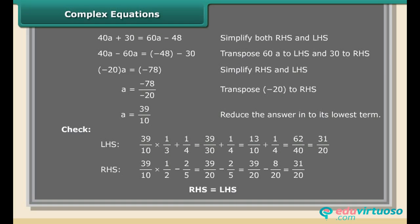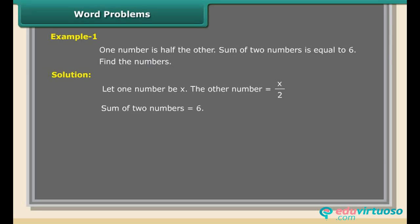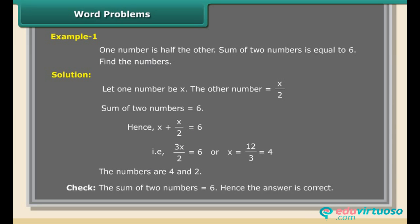Word problems. Example 1: One number is half the other and their sum is 6. Find the numbers. Solution: Let one number be X; the other is X/2. X + X/2 = 6; 3X/2 = 6; X = 12/3 = 4. The numbers are 4 and 2. Check: 4 + 2 = 6. The answer is correct.